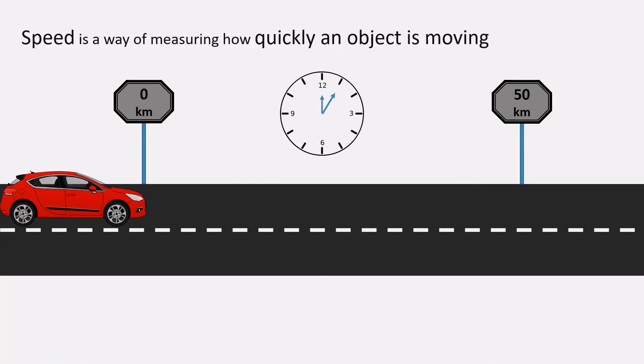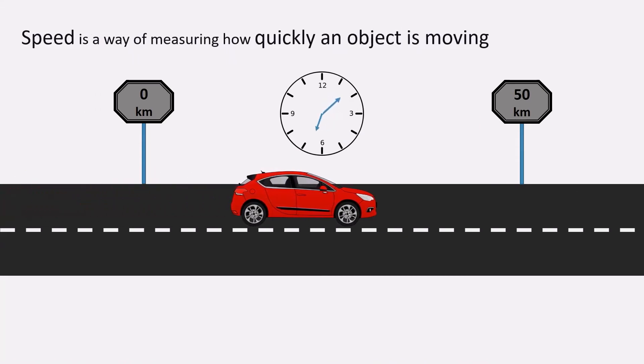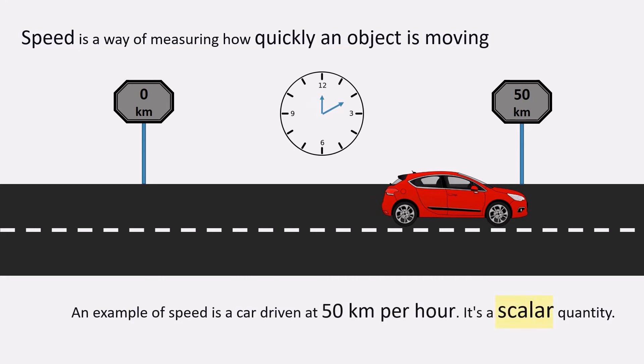Speed is a way of measuring how quickly an object is moving. An example of speed is a car driven at 50 km per hour. It's a scalar quantity.